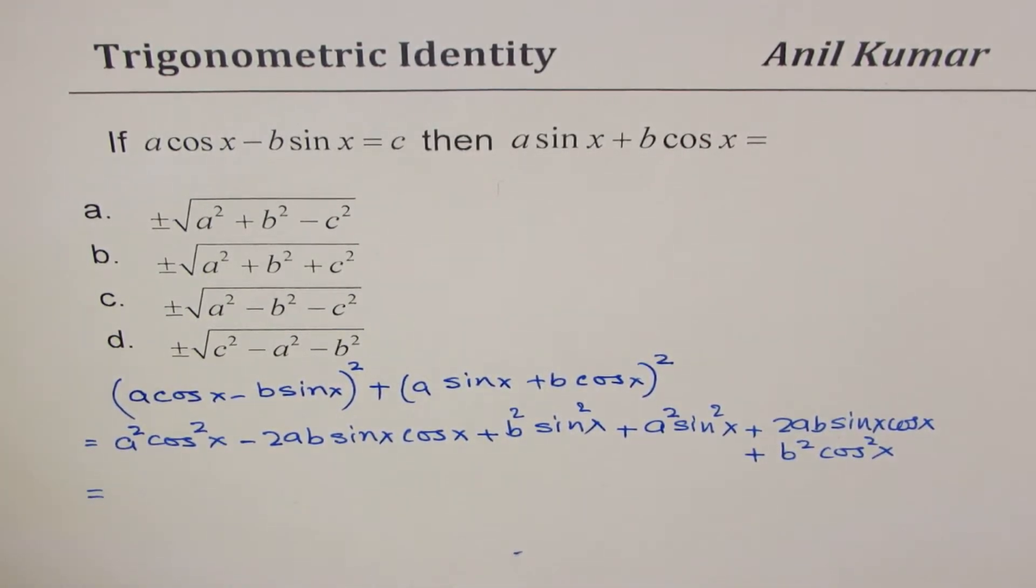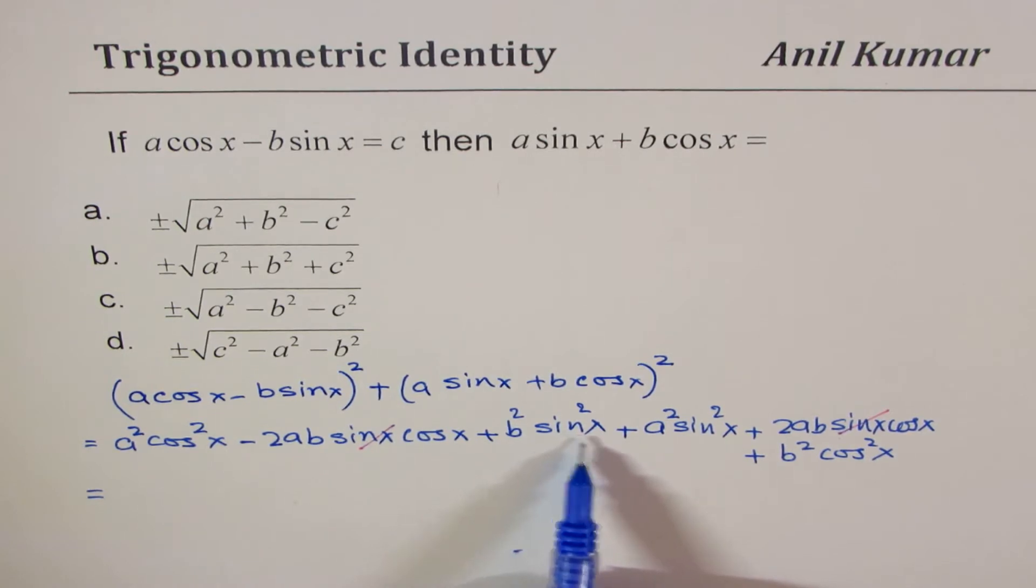Now these terms, 2AB sin x cancel out. The others can be added. A square cos square x plus B square cos square x, correct? So we have these common terms, B square sin square x and we have A square sin square x.